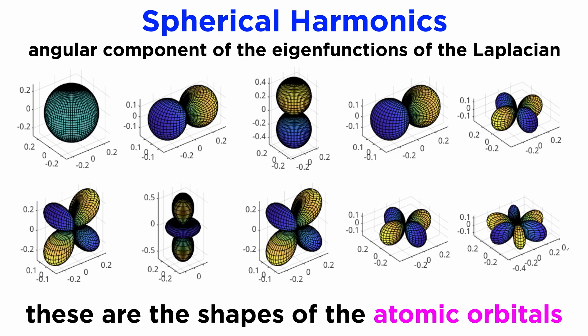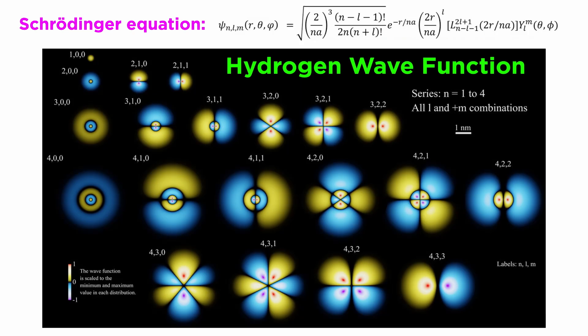For those who know a little chemistry, these shapes should look very familiar. They are the shapes of the atomic orbitals, and this is not a coincidence. The solution to the Schrödinger equation that describes the wave function of the electron in the quantum mechanical model of the atom involves finding the angular components of the wave equation in spherical coordinates.